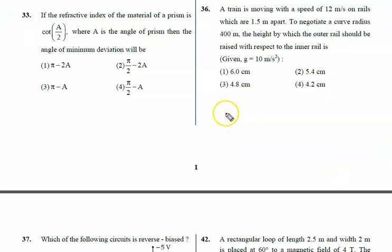Now we will discuss question number 36. A train is moving with a speed of 12 meters per second on rails which are 1.5 meters apart. The distance between them is 1.5 meters and the train is moving on it.